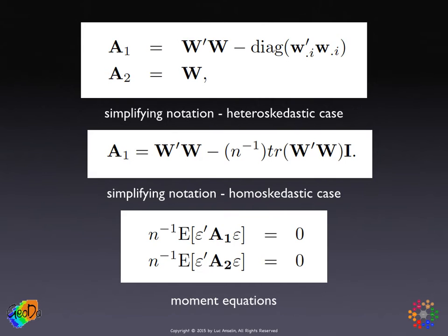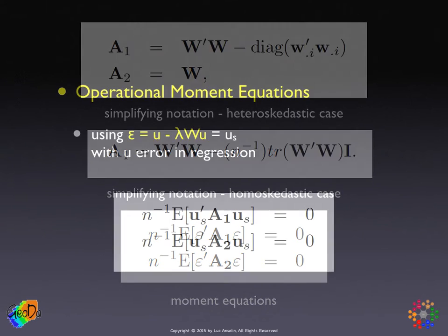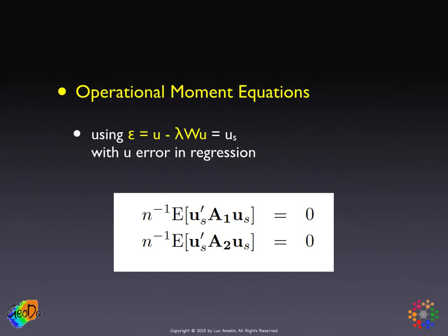This is set up in general for the heteroscedastic case, and the homoscedastic case follows as a special situation. We are still nowhere because these equations are written in unobservable error terms, so we now replace the error terms by their expression in terms of the error in the regression. The epsilons are the error terms in the spatial autoregression of u, so by definition epsilon equals u minus lambda W u, or the spatially filtered u. To operationalize this expression, we plug this into the equations. It includes the parameter lambda, which is what we want, and it uses the error term in the regression, which we can replace by the residuals.